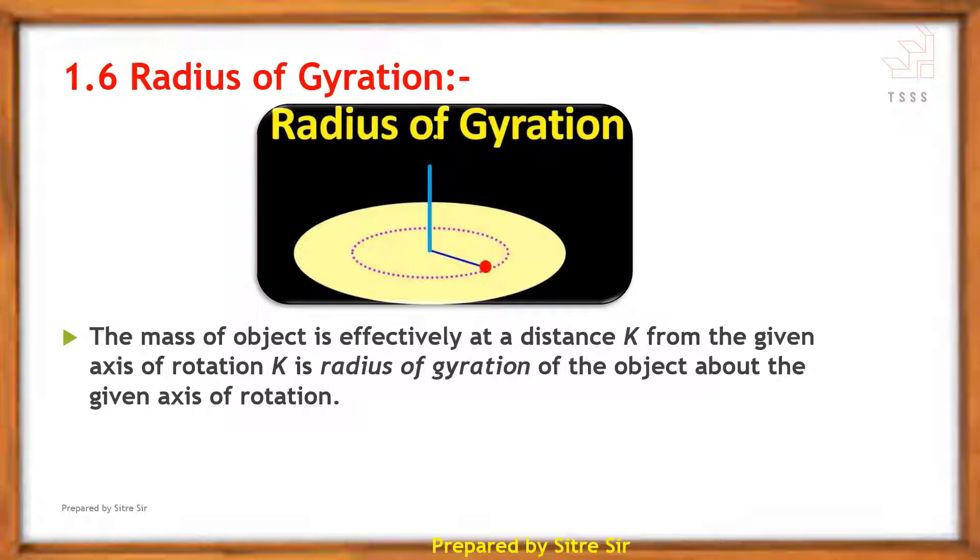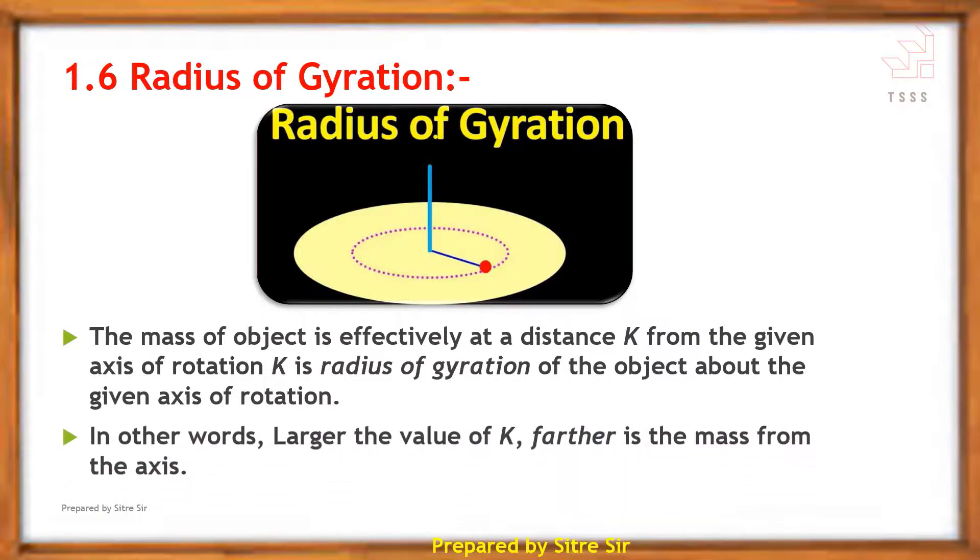Radius of gyration means the complete body's mass, which is distributed at various distances from the axis of rotation, is concentrated at one distance. That distance from the axis of rotation is the radius of gyration K.